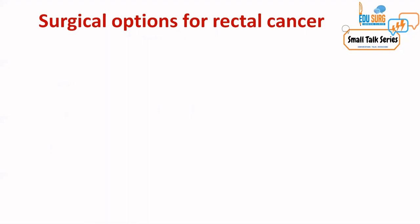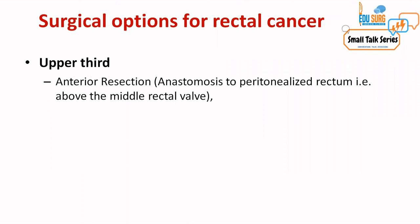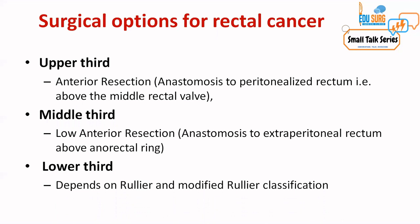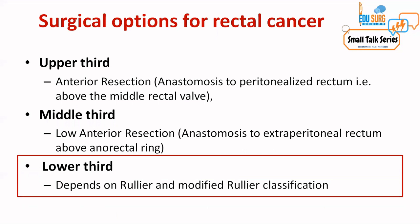After all that we have discussed, for the upper third of the rectum the surgical option is anterior resection, with anastomosis to the peritonealized — intraperitoneal — part of the rectum, above the middle rectal valve. Middle third of the rectum is low anterior resection, with anastomosis below the middle rectal valve to the extraperitoneal rectum but above the anorectal junction. Lower third of the rectum and anal canal cancer surgery depends on the Rullier and the modified Rullier classification.